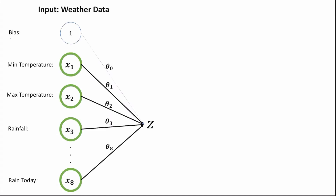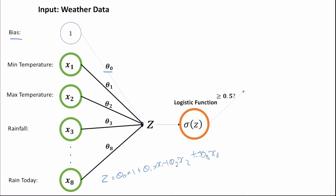Here is a more visual representation. We have all of our input data — looking back at the previous slide, these are basically just the column titles: minimum temperature, maximum temperature, rainfall, and rain today. The bias enables us to include the intercept, or theta 0, which we discussed briefly in linear regression. We're using all of these inputs to compute a value z, where z equals theta 0 times 1 (the bias), plus theta 1 times x1, plus theta 2 times x2, plus theta 3 times x3, all the way up to plus theta 8 times x8. Once we've produced z, we input it into the logistic function, which converts it into a range of 0 and 1.